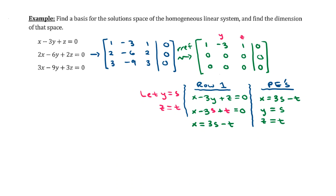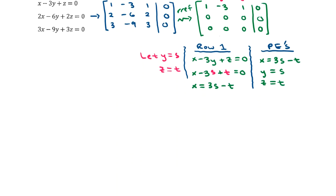So that gives us our set of parametric equations. I'll write out x first. x is equal to 3s minus t. y is equal to s. And z is equal to t. So how do we find a basis for the solutions? In other words, what does the solution space look like? And what can we determine about the dimension of that space?